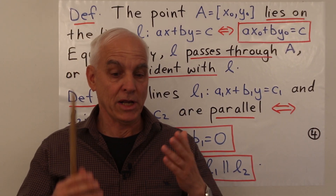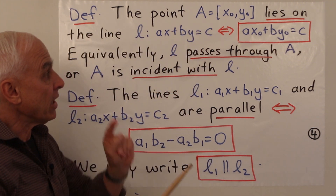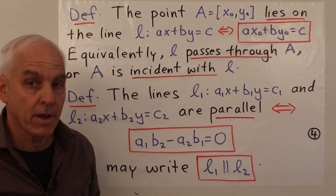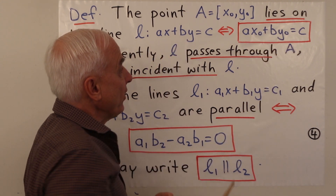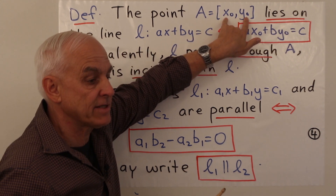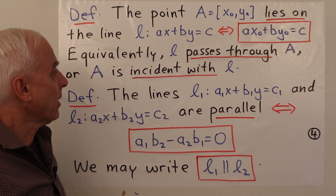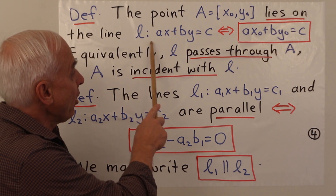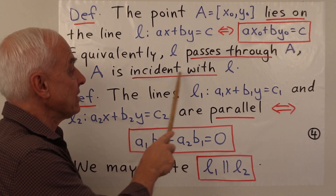Now we have to describe the relationship between points and lines. We say that a point A = [x₀, y₀] lies on the line L given by ax + by = c precisely when ax₀ + by₀ = c — in other words, the equation is satisfied when you plug in the values defining A. Alternatively, we say the line L passes through A, or that the point A is incident with the line L.